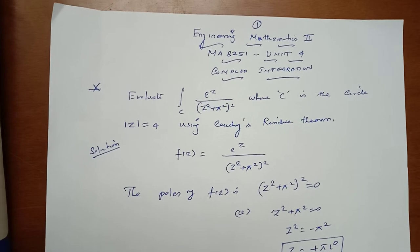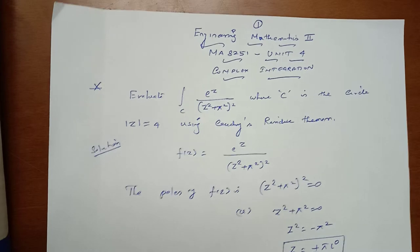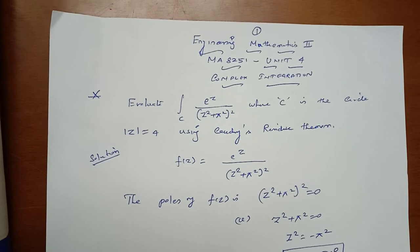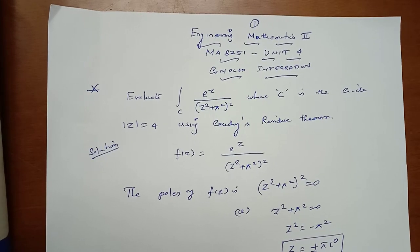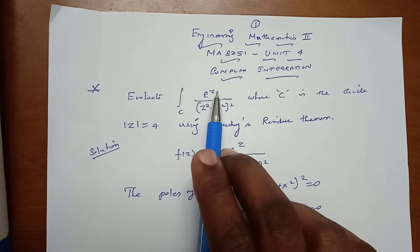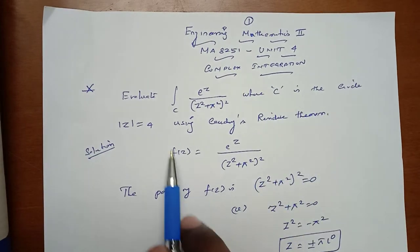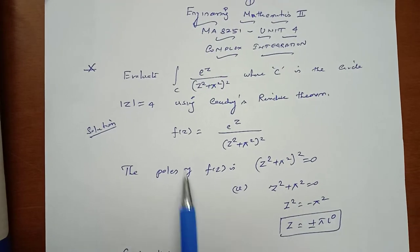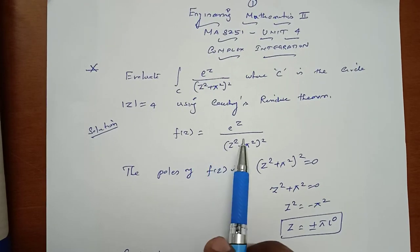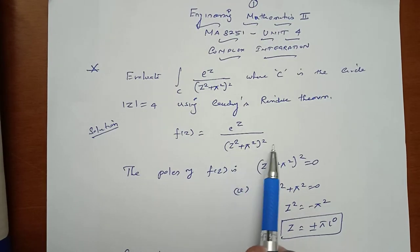Engineering Mathematics 2, MA8251, Unit 4: Complex Integration. We will discuss problems based on the Cauchy Residue Theorem. First, evaluate the integral over a closed curve of e^z divided by (z² + π²)², where C is the circle |z| = 4, using the Cauchy Residue Theorem. The given function is f(z) = e^z / (z² + π²)².